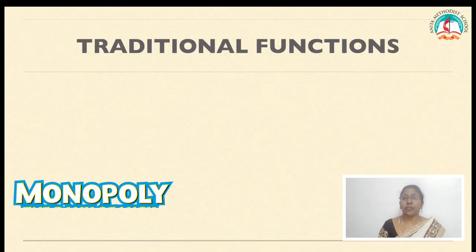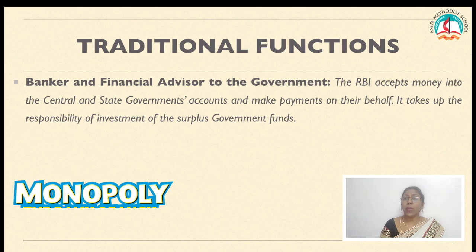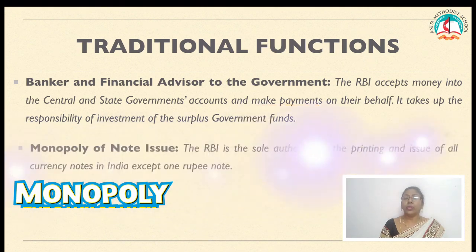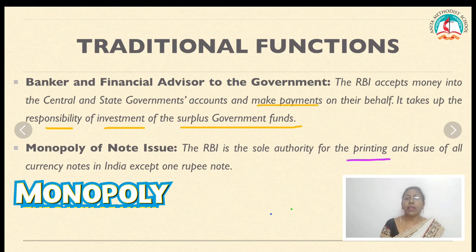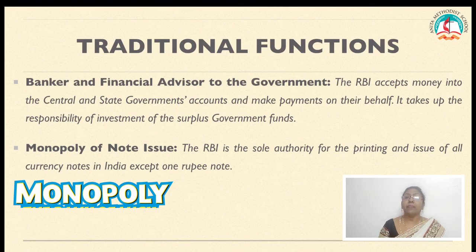Now we will see the traditional functions of RBI. The first traditional function is banker and financial advisor to the government. RBI advises the government on how much funds are necessary and available. It manages accounts of the central and state governments and makes payments on their behalf. It also takes up the responsibility of investment of surplus government funds. Regarding monopoly of note issue, the RBI is the sole authority for printing and issuing all currency notes in India. Currency notes are printed at places like Nasik, Dewas, Salboni, and Mysore. Currency notes are not printed outside India.